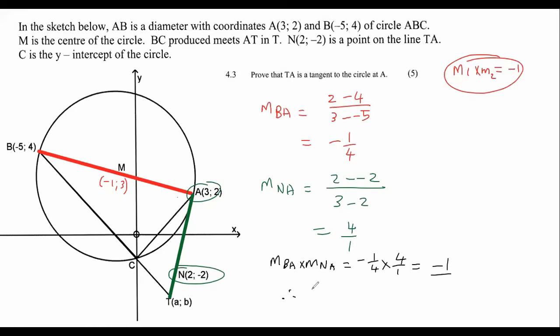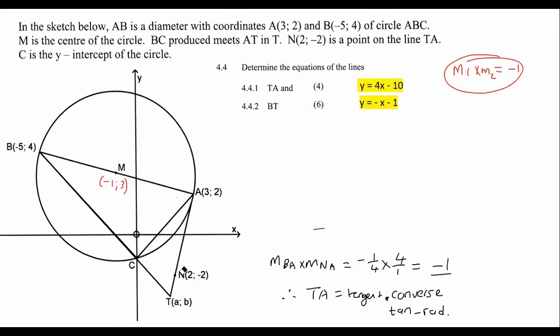So therefore, TA is a tangent because of the converse of the tan-rad theorem. That's quite a cool little question. Quite easy. That's how we prove that is a tangent.